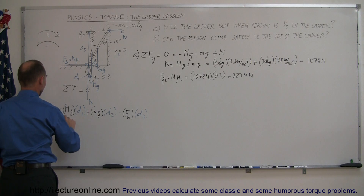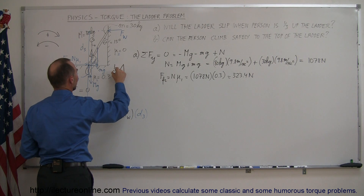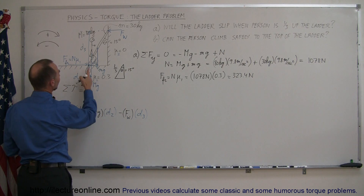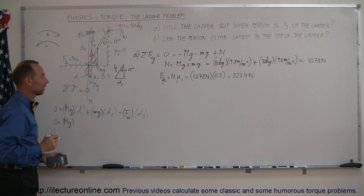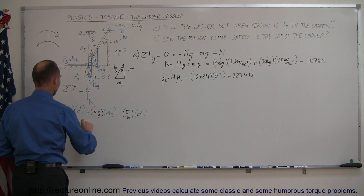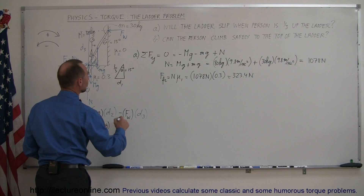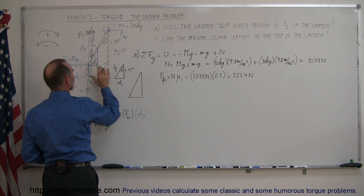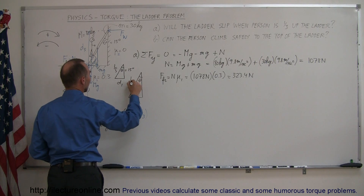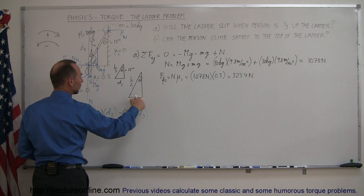Let's figure out what D1, D2, and D3 are equal to. For D1, we have a small triangle where the hypotenuse is one-third the length of the ladder. The angle theta is 15 degrees, and D1 is opposite to that angle, so D1 equals L over 3 times the sine of theta. For D2, the triangle has a hypotenuse of L over 2 — half the length of the ladder — and D2 is also opposite to theta, so D2 equals L over 2 times the sine of theta.